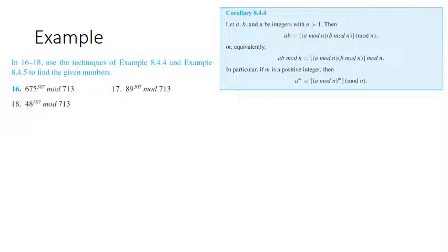Let's look at how we can put corollary 8.4.4 to very practical use for encryption algorithms. This corollary is really telling us that if you're not interested in the actual value of a·b but what it is congruent to modulo n, you can do the mod n operation to both a and b separately. You can also do that when raising a number to an exponent — if you just care what a^m is congruent to modulo n, you can do the mod n operation to a before raising it to the exponent.